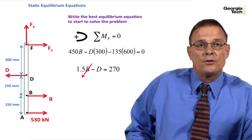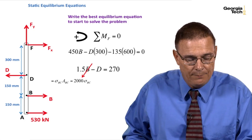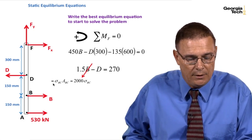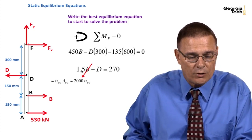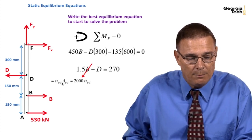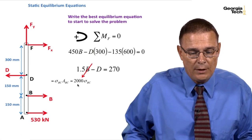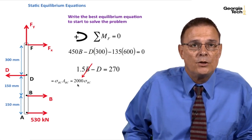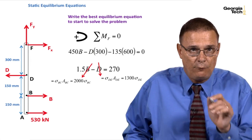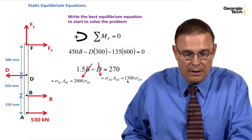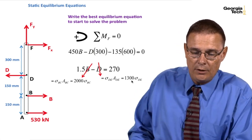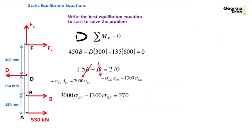We want to find the stresses, so let's go ahead and put the stresses in for B and D. The force in bar B is going to be equal to the stress in bar BC times its cross-sectional area, which is 2000 times sigma BC. Do the same thing for D. The force in D is equal to sigma DE times its cross-sectional area of 1300. Now I have an equation with the two stresses in it. We'll call that equation star. We have one equation and two unknowns. Those are what I want to solve for.